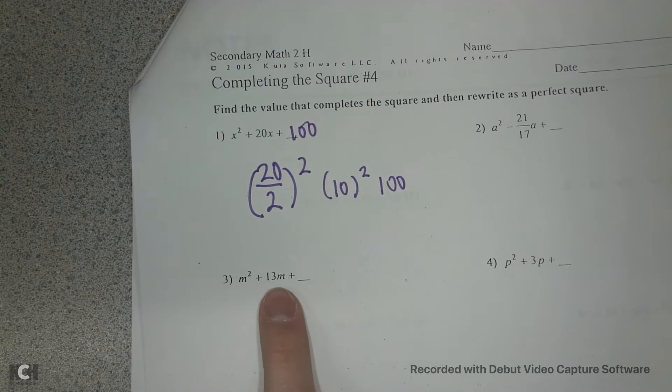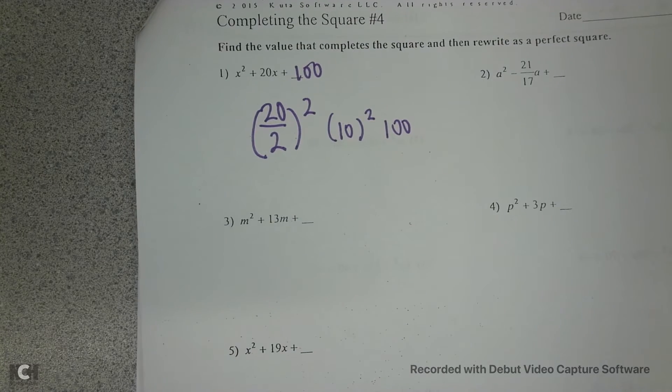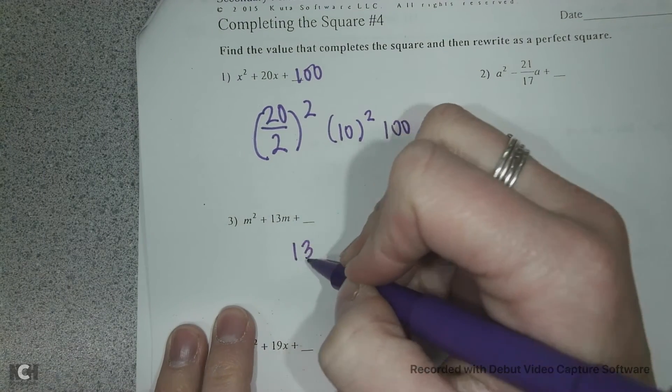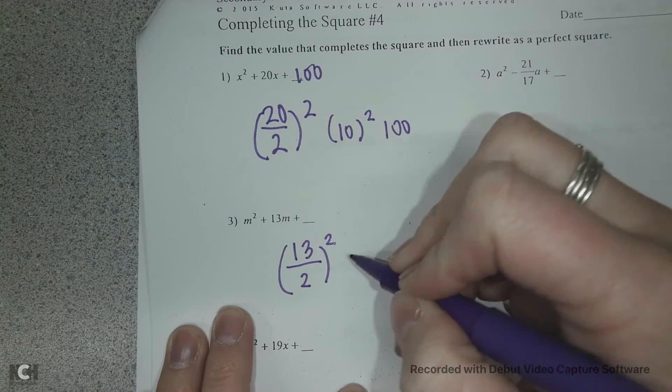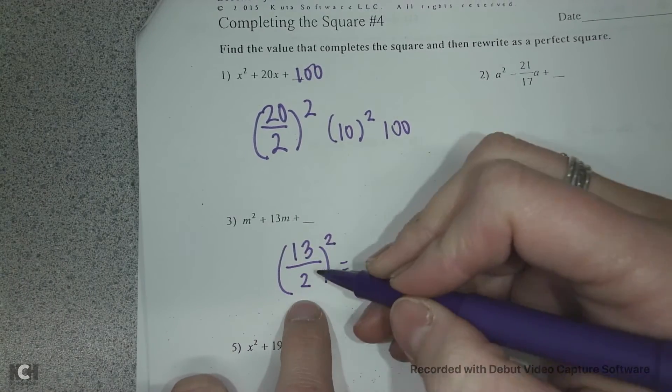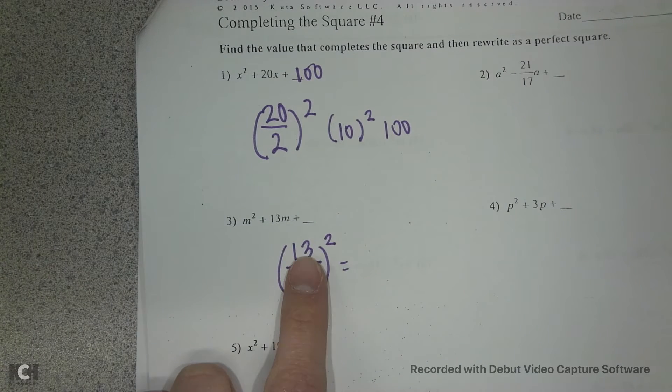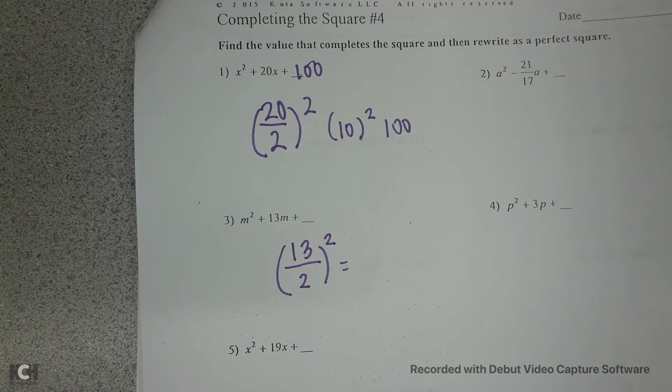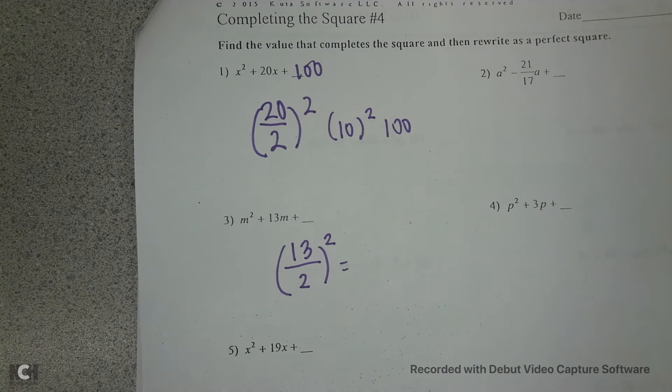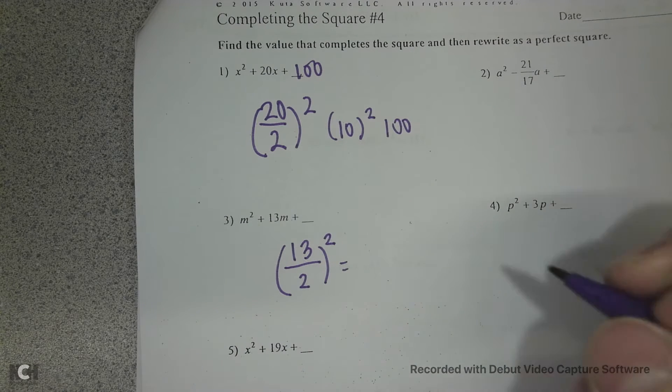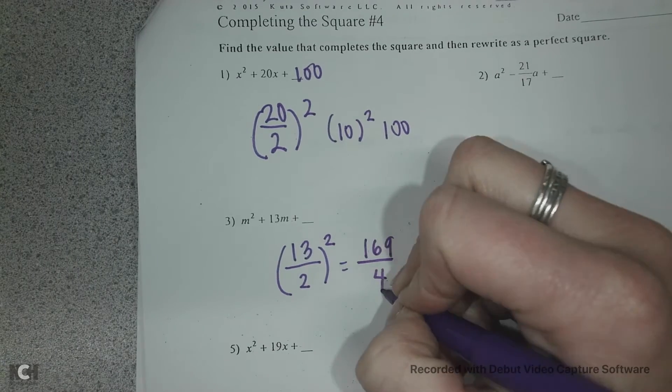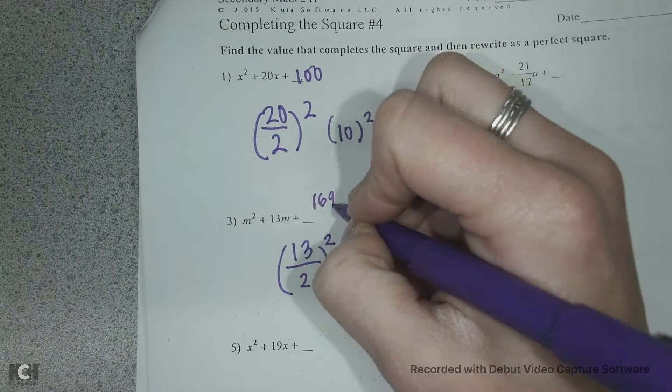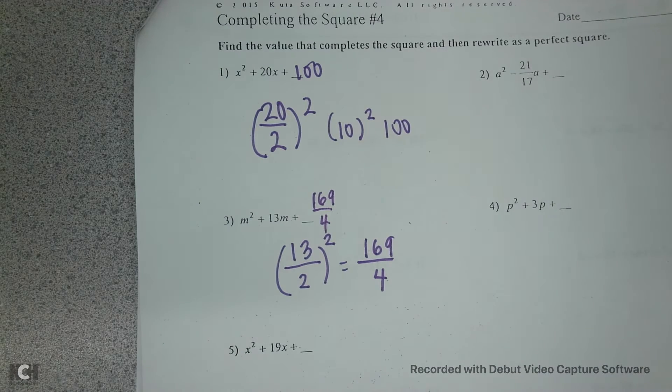Then if you have an odd number, you would do 13 divided by 2, and we're going to square it, but this time don't divide, don't get decimals, so you're just going to leave it as a fraction. You're going to square the top and you're going to square the bottom. So 13 squared is 169, and 2 squared is 4, so I would add 169 fourths to this problem.